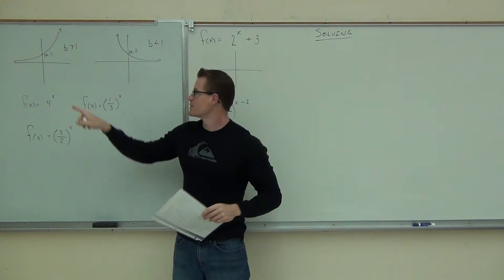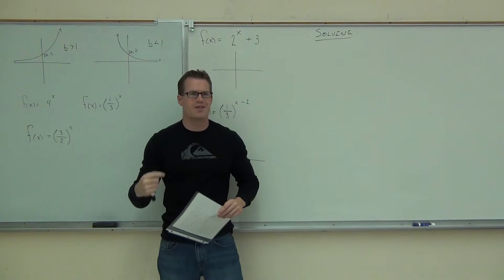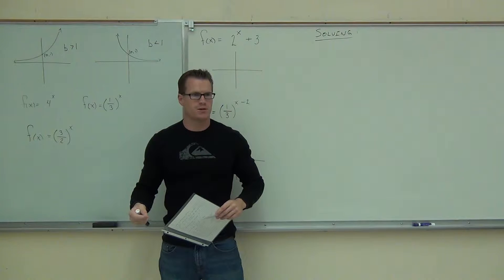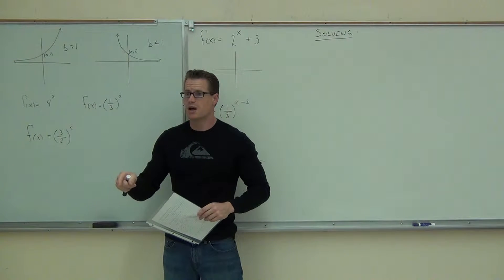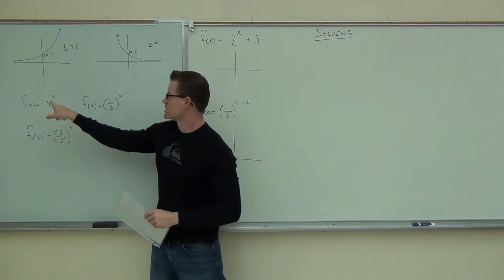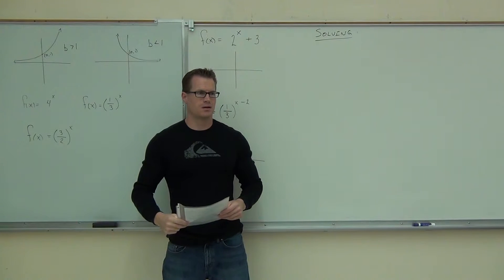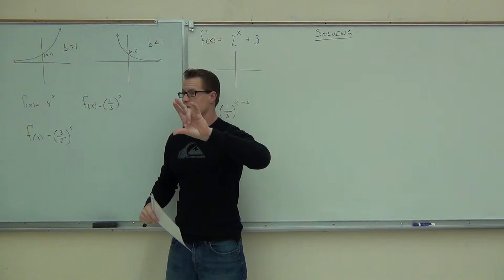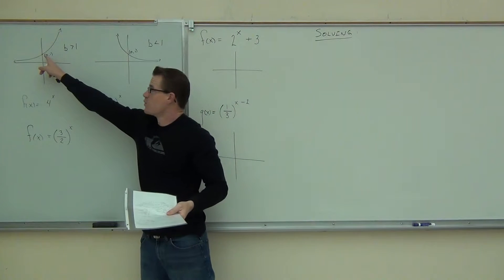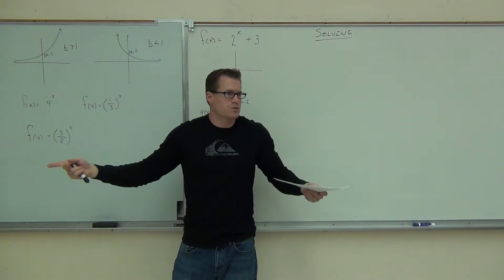Notice how, in each case, we go to the point (0, 1), and we go to the point (0, 1). Do you remember why that is? Let me remind you of this. What would happen if I plugged in 0 here and here and here? In every case, what am I going to get? 1. What's anything to the 0 power, folks? 1. That's why we're always going to get the point (0, 1) unless we shift these around. Are you with me on that? It's always going to go through (0, 1). That's why we have that point and that point.